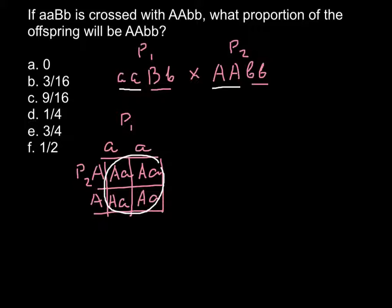Now we can answer our question and this is going to be answer A. There's zero possibility for the progeny to be the same genotype as one of the parents, as parent 2.